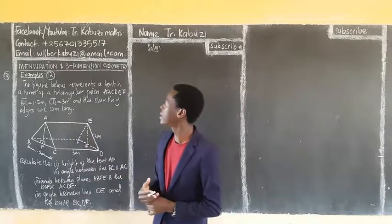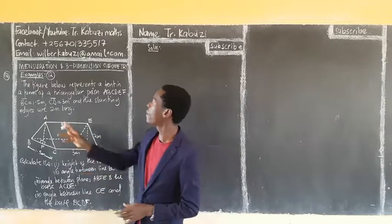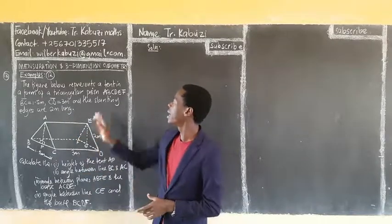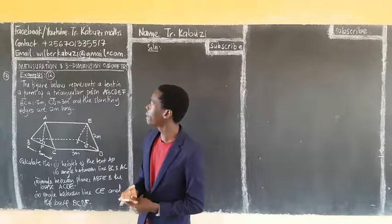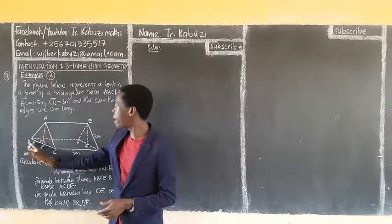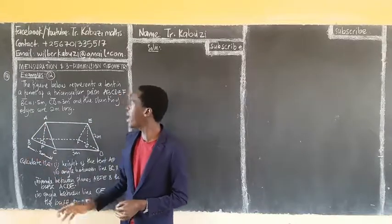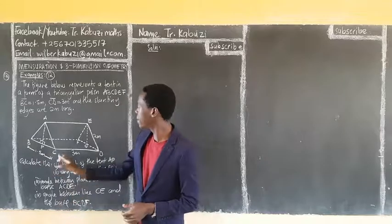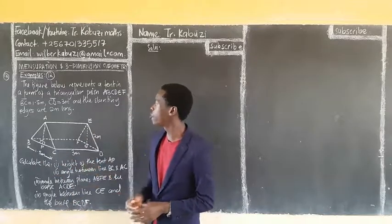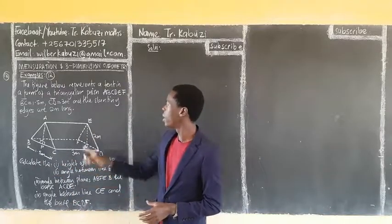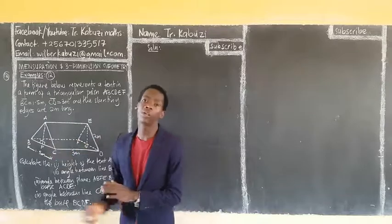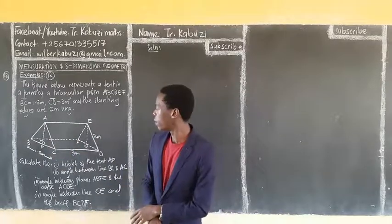The figure below represents a tent in the form of a triangular prism A, B, C, D, E, F. Where BC, CD are the base edges, and all the slanting edges are 2 meters long.